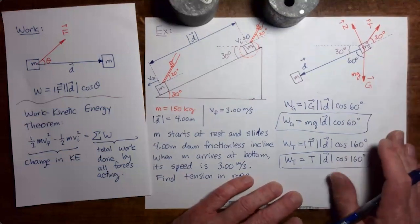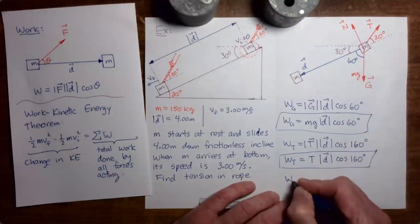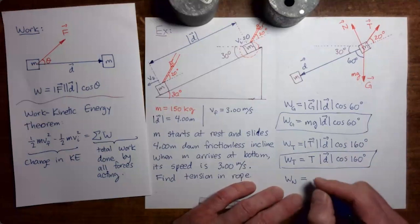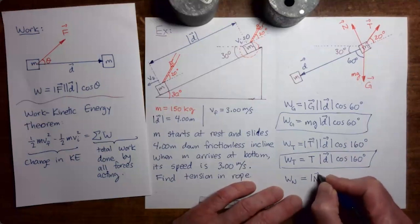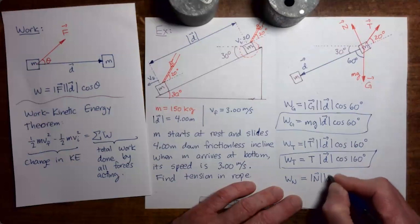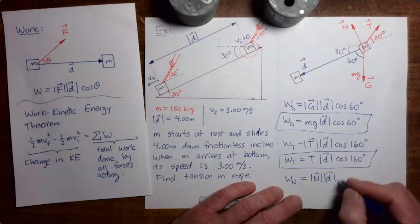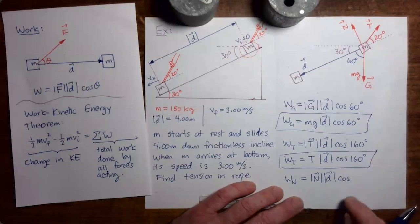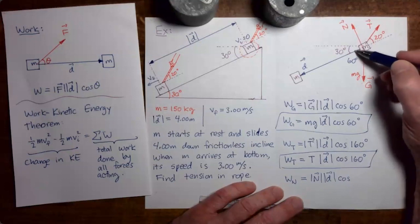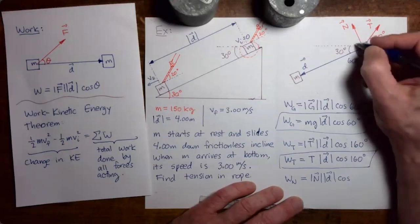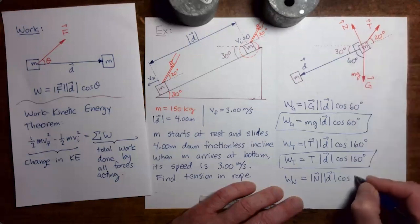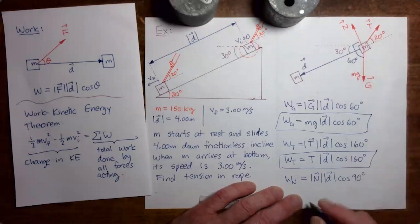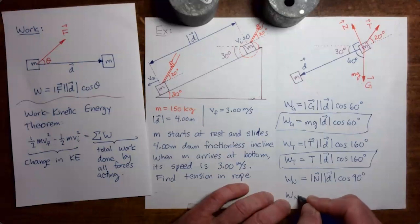The last force is the normal force. The work done by the normal force equals the magnitude of the normal force times the magnitude of displacement times cosine of the angle between them. Since the normal force and the displacement vector are perpendicular, that angle is 90 degrees. Cosine 90 is zero, so the work done by the normal force is zero. That completes step three.